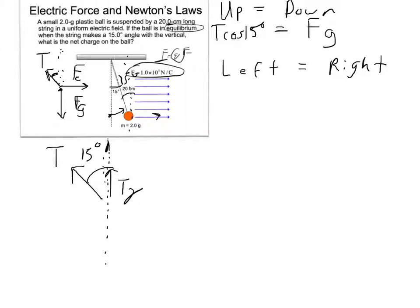Left and right forces. Well, the rest of the tension force would be pointing to the left, and that would be the x part, which here is opposite the angle, opposite. So that would be T sine 15 degrees. And the right force, based on my diagram, is that electric force, Fe.